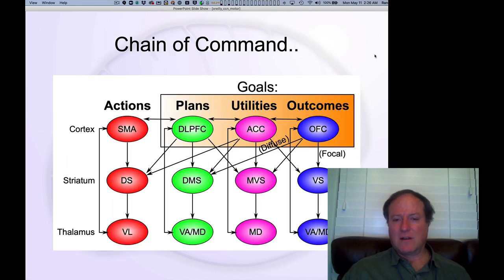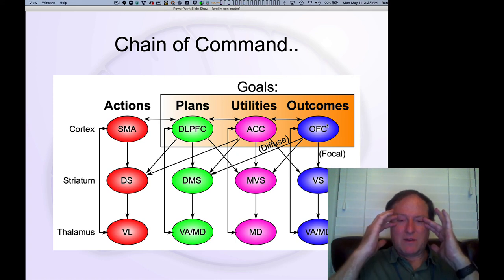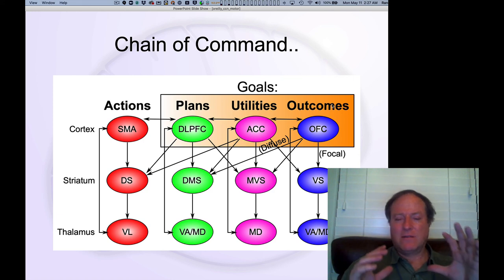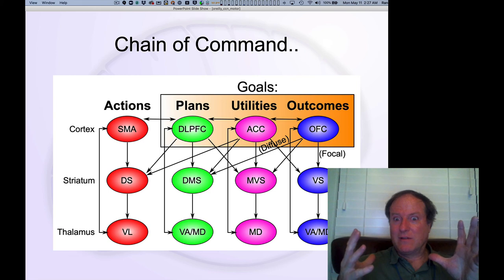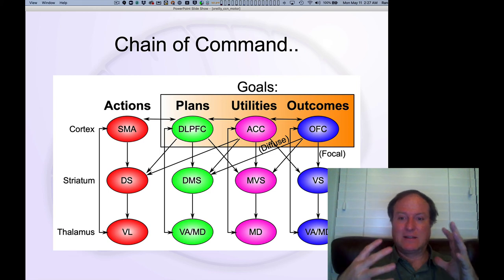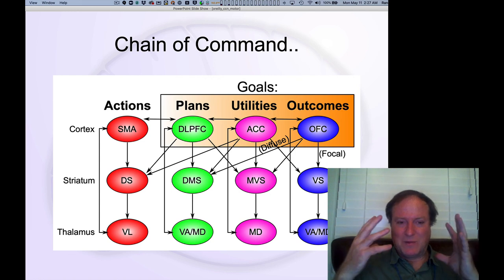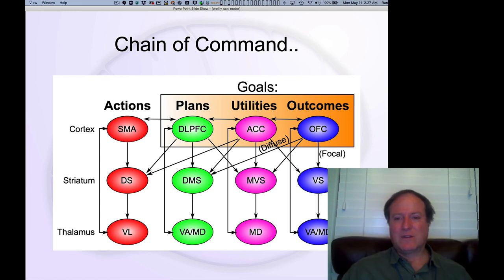The orbital and cingulate areas are really important for more motivational drive. In our cartoon to understand this, the orbital frontal cortex — named because it's right above the orbits of your eyes — is important for representing outcomes, things that you want. Outcomes are specific things like a chocolate milkshake or a nice Chianti, some kind of specific outcome that you desire.